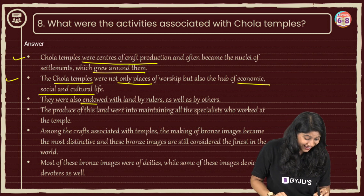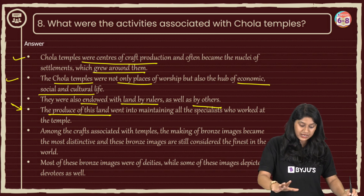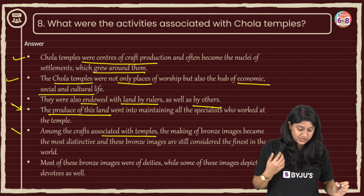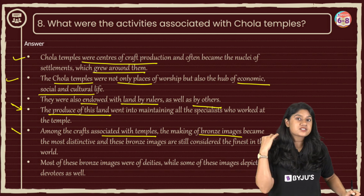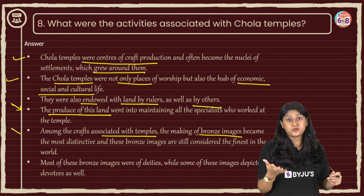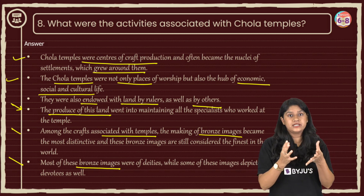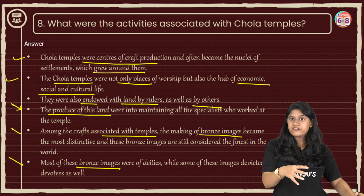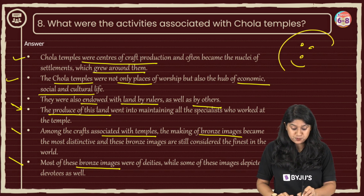Temples were also endowed with land by rulers and others, and the produce of the land was used for the temple itself. Among the crafts associated with temples, they used to make bronze images of gods and sometimes of devotees, considered the finest craftsmanship. People would come and buy these, contributing to economic growth. You can write your answer in four or five points for a five-mark question, or two to three points for a three-mark question. With this, we are done with all the questions from the chapter New Kings and Kingdoms.